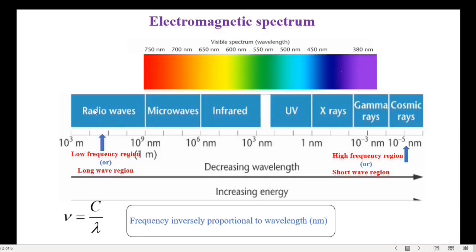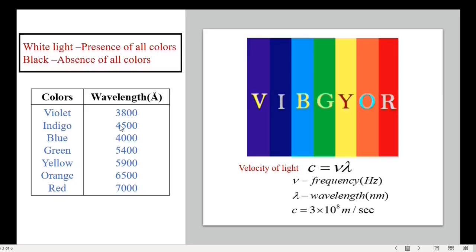The radio wave region is known as the long wavelength or low frequency region, while the gamma rays or cosmic rays region is known as the short wavelength or high frequency region, since frequency is inversely proportional to wavelength — that is, higher the frequency, lower the wavelength. In this table I have listed wavelengths of different colors, not exact values but representing the range of wavelength.